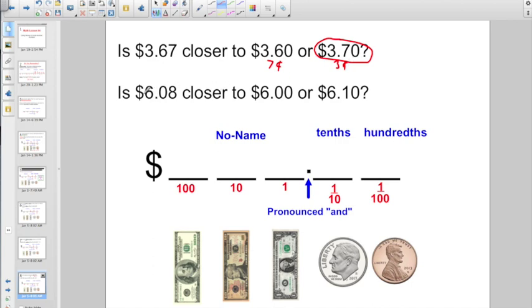Let's try it one more time. Is $6.08 closer to $6.00 or closer to $6.10? Well, from $6.08 to $6.00, that's a difference of eight cents, right? But from $6.08 to $6.10, that is a difference of two cents. Which one is it closest to? It looks like it's closest to $6.10. I haven't met too many fifth graders who struggle on these.